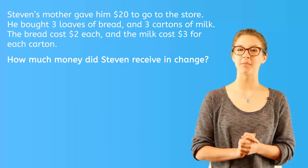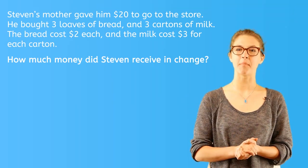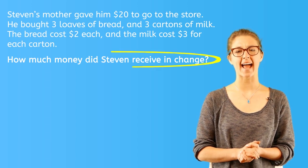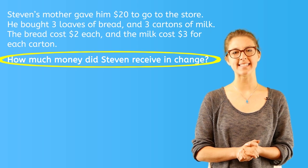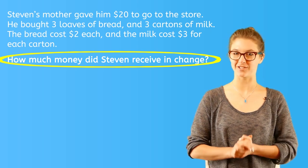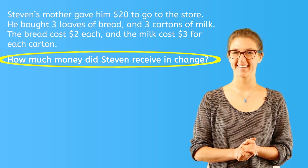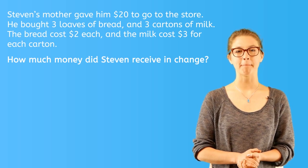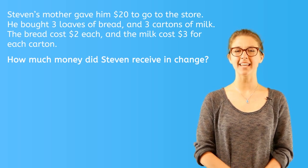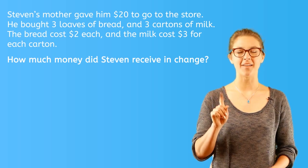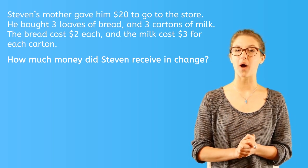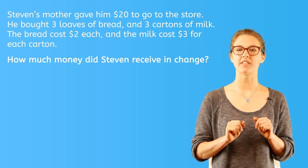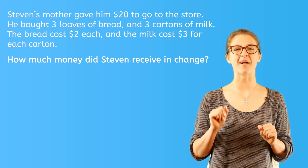We know that this problem has many steps to solving it because there is a lot of information in it. The question asks, how much money did Stephen receive in change? So we know we'll need to subtract because receiving change means there was a larger amount to begin with. But before we do that, we need to know how much the food cost. Let's solve this problem by breaking it up into smaller steps.